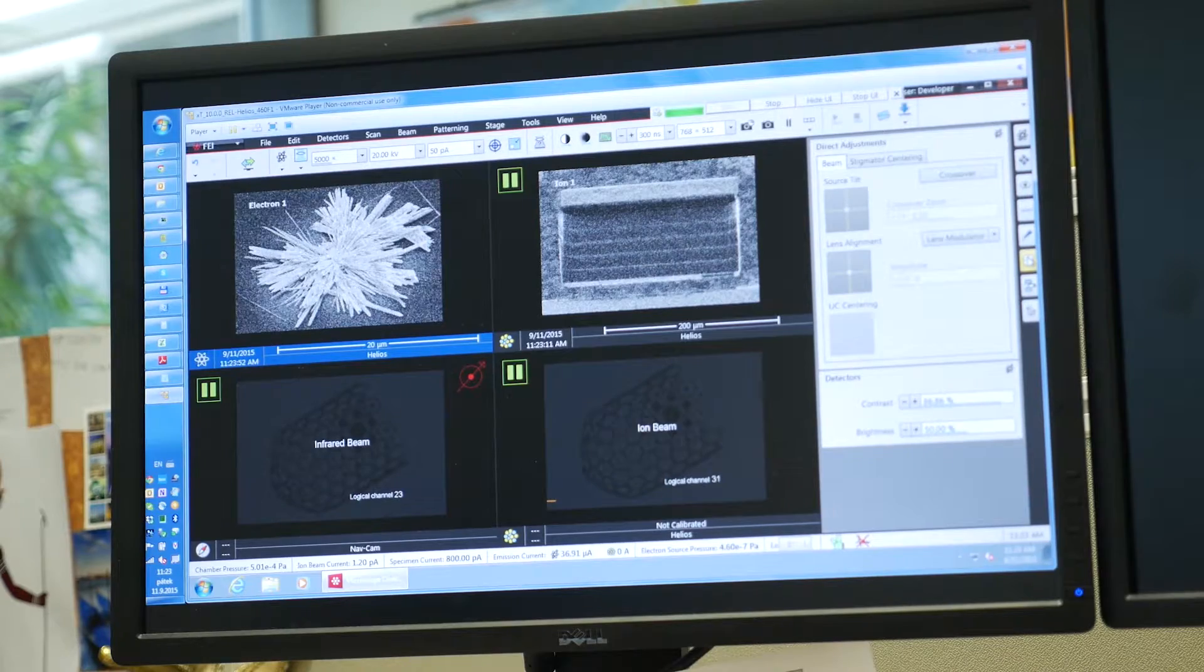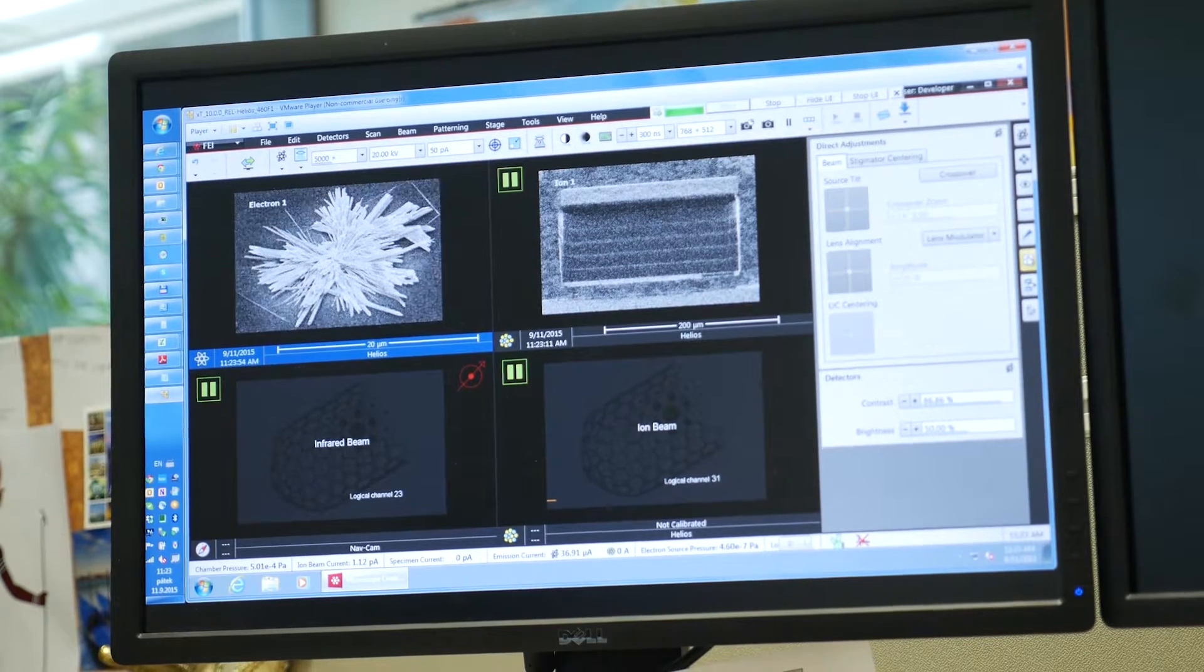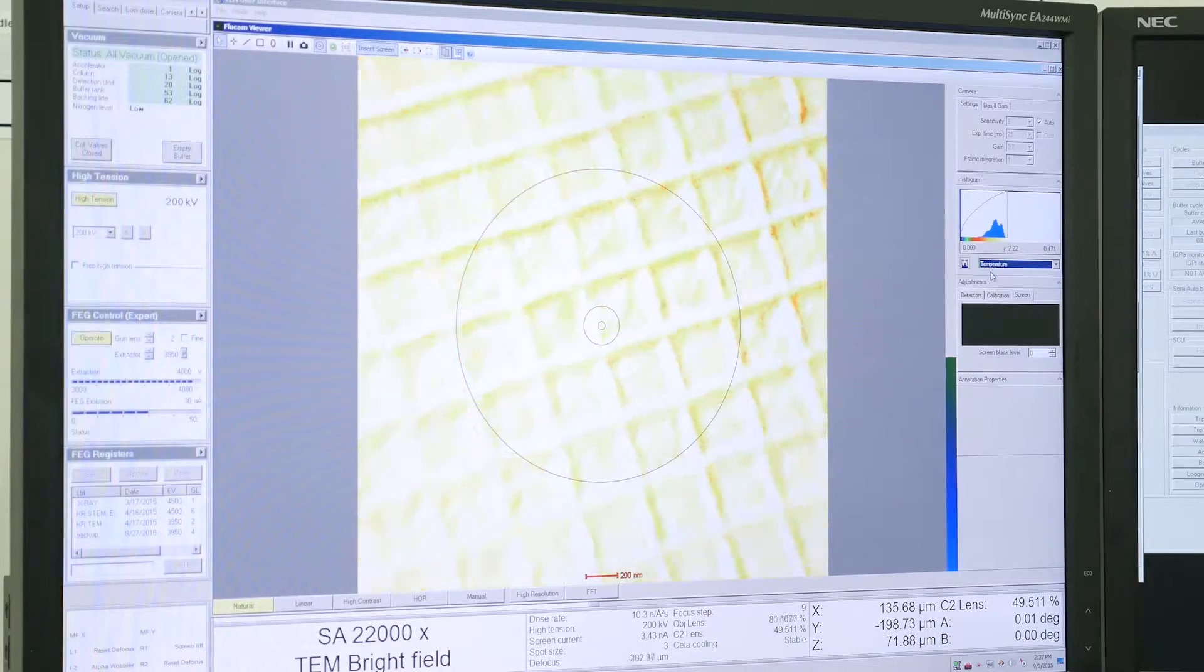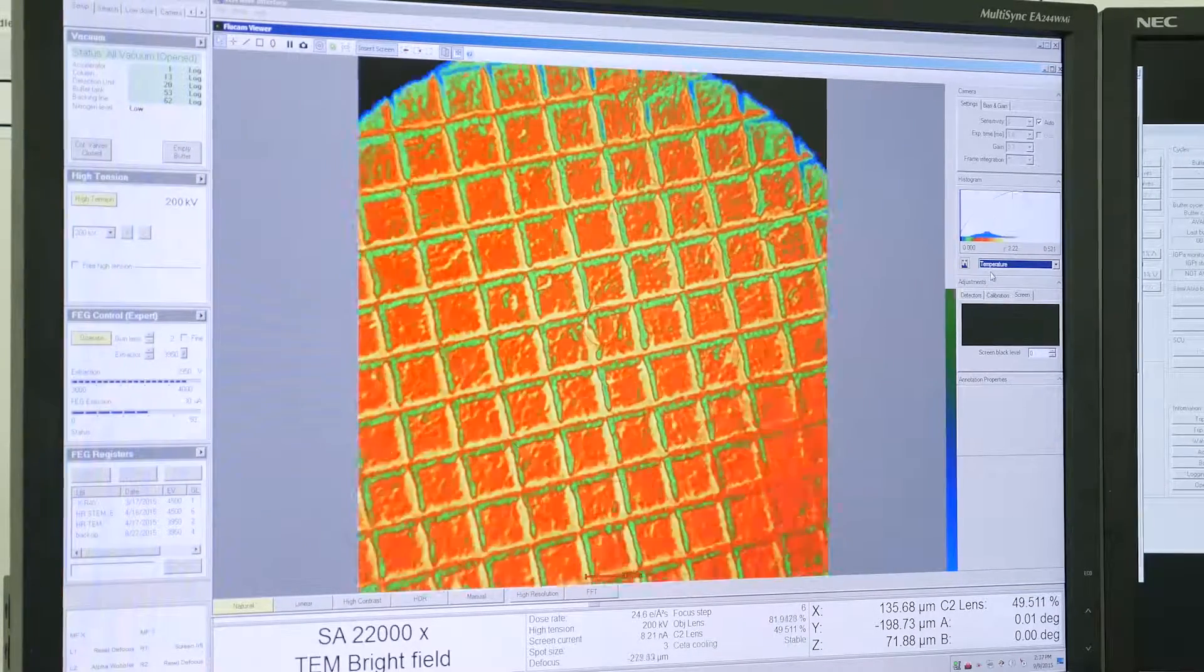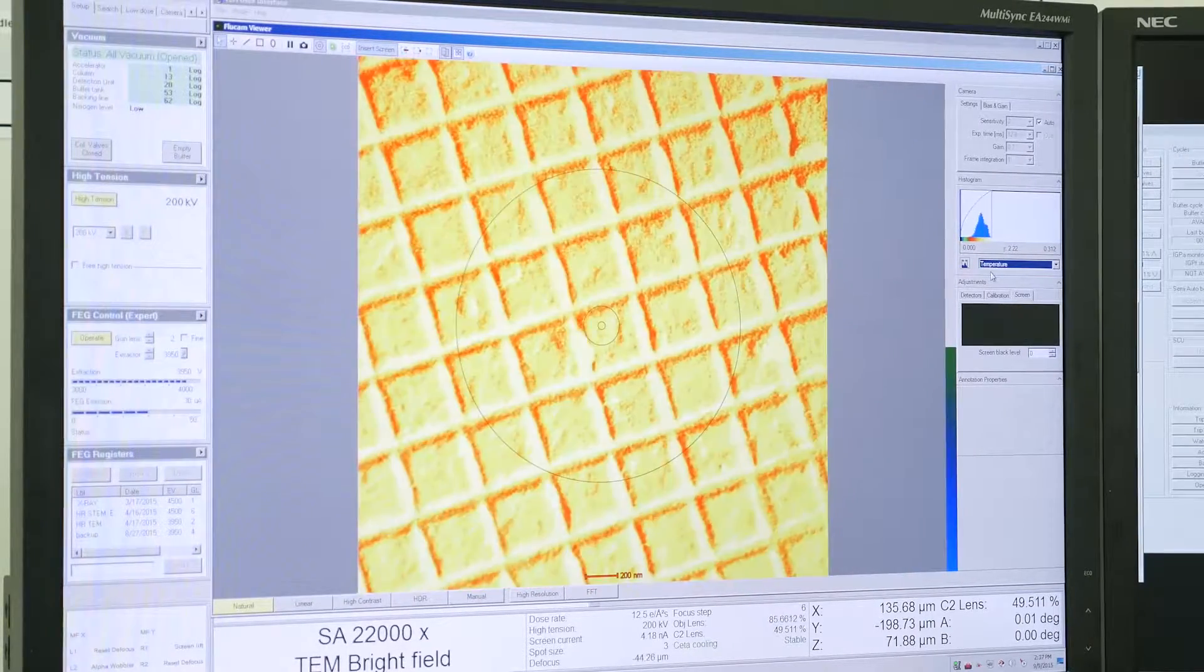The image obtained with the detectors in the microscope chamber is projected on the screen. So is it possible to watch the sample in different ways, depending on the microscope setup? Yes, and it is the software which makes it possible to find the optimal conditions for a particular purpose.